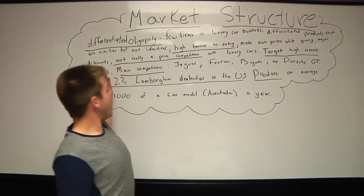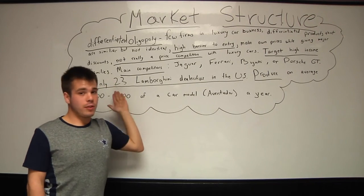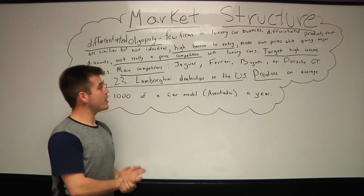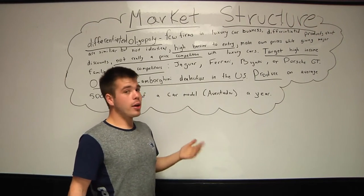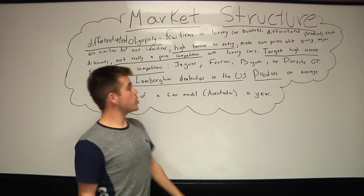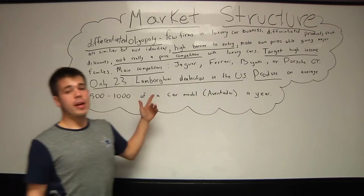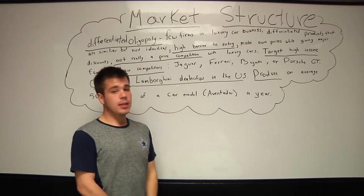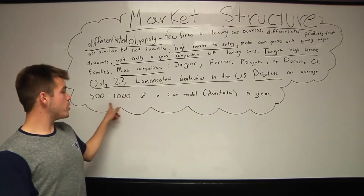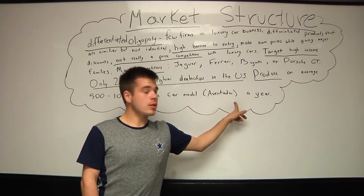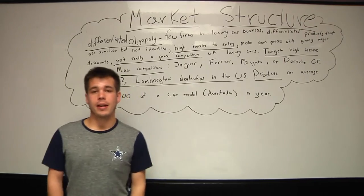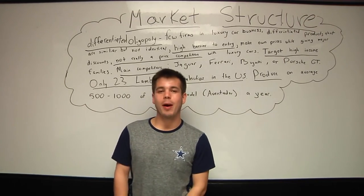They like to target high-income families, the ones that can mostly afford it because a middle-income family definitely couldn't afford it. Their main competitors are Jaguar, Ferrari, Bugatti, or Porsche. There's only 23 Lamborghini dealerships in the U.S., and they produce on average $500 to $1,000 of a car model, specifically the Lamborghini Aventador a year. And now here we'll tell you more about the cost.